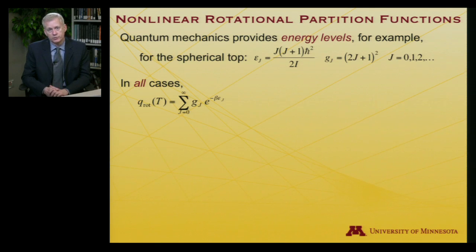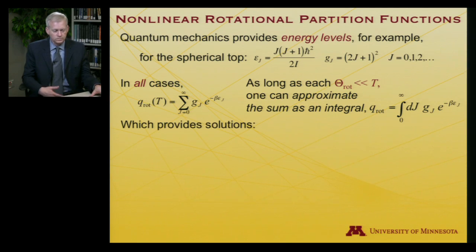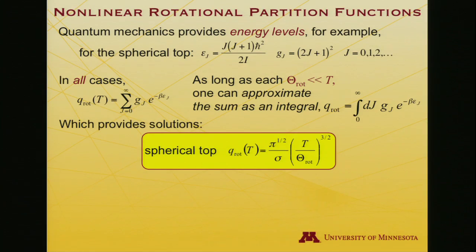So in all cases, of course, the rotational partition function can be written in a general way. And it will still be the case that as long as the rotational temperature associated with each moment of inertia is well below the temperature at which we're working, we can replace these sums with integrals and solve the integrals. And when you do that, the solutions you end up with are shown here. So for the spherical top, we've got something that looks reasonably familiar. It's something that dropped out of the diatomic temperature divided by rotational temperature, but now raised to the 3 halves power. And appearing out front, a pi to the 1 half. And our symmetry number is still there.